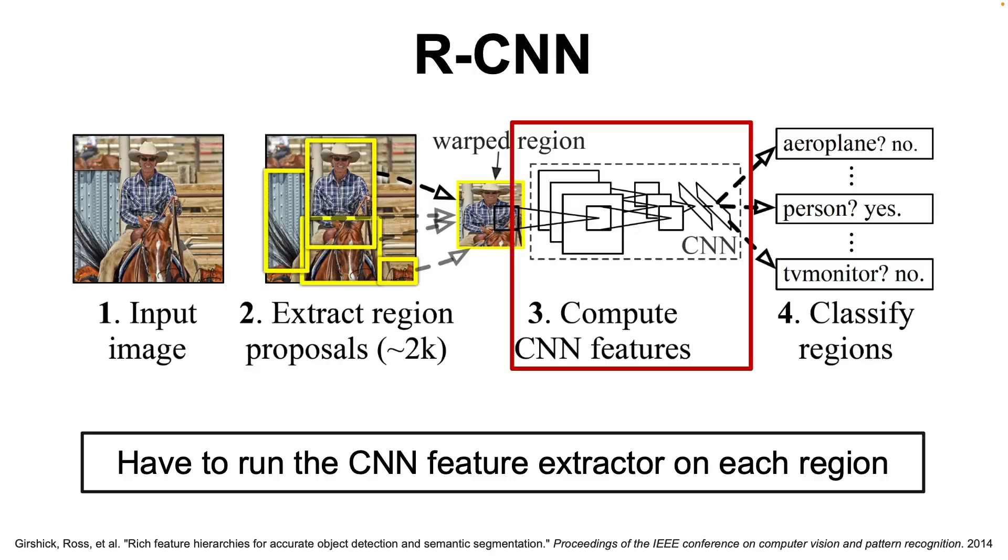Fast R-CNN was introduced in 2015 to address this issue and it improved the R-CNN model by eliminating the need to run the CNN feature extractor on each proposed region.